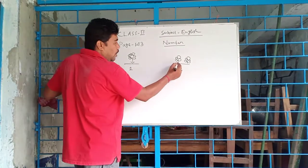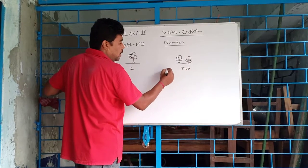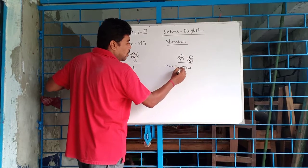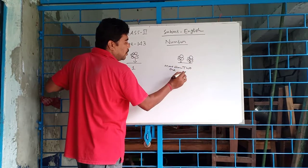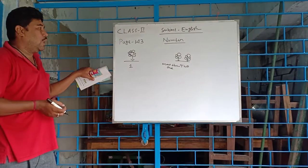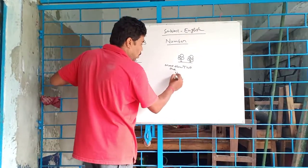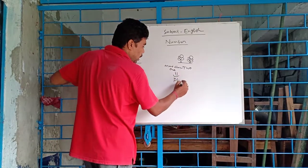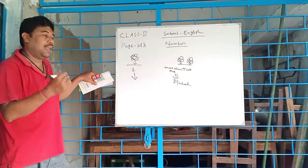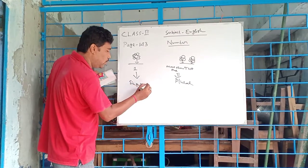And when you count here, we see two flowers. That is more than one. When we count more than one, we call it plural number. We call it plural. And when the number is only one, it is called singular number.